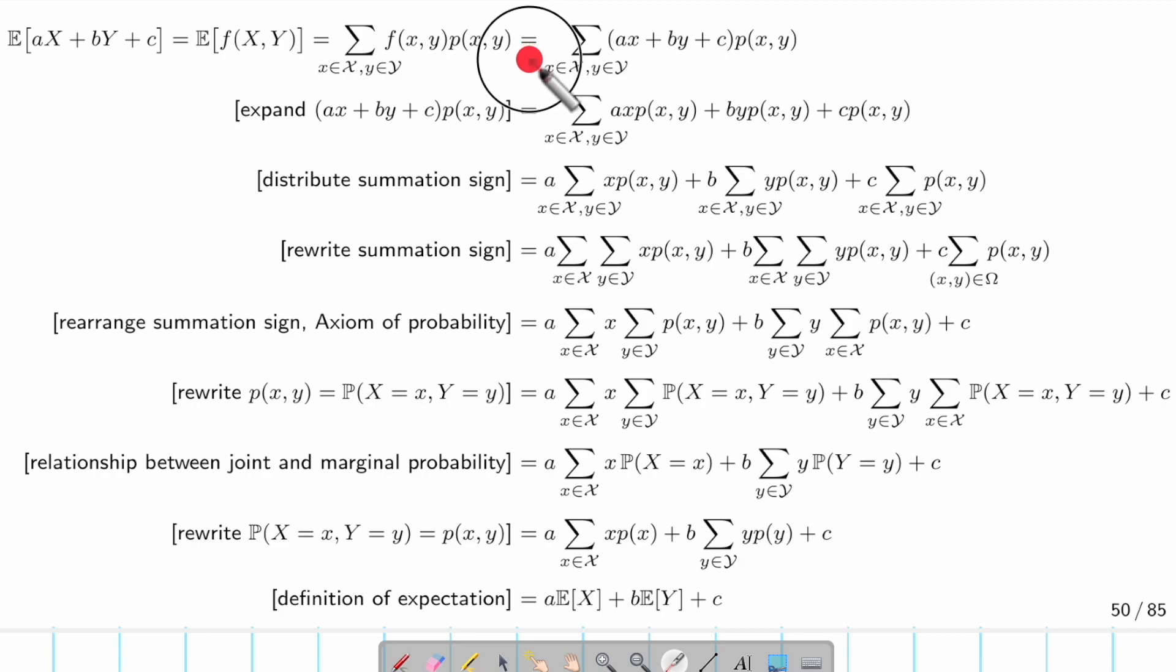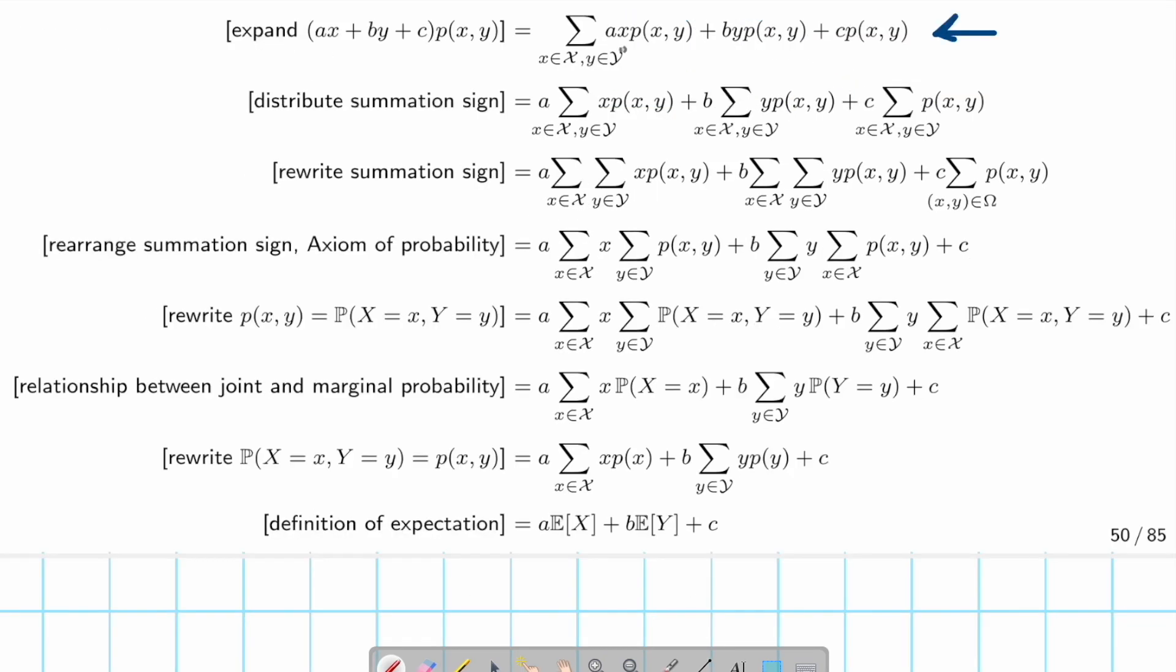This equal sign is saying that we now write down the f explicitly as aX plus bY plus c. Now we distribute the p into each of the terms. This gives us this term, aXp(x,y). Distributing this to bY gives us this term, and lastly distributing p(x,y) to c gives us this term.